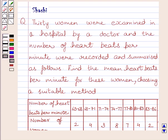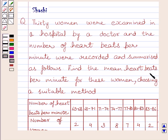Hi and welcome to the session. I am Shashi and I am going to help you with the following question. 30 women were examined in a hospital by a doctor and the number of heartbeats per minute were recorded and summarized as follows. Find the mean heartbeats per minute for these women choosing a suitable method.